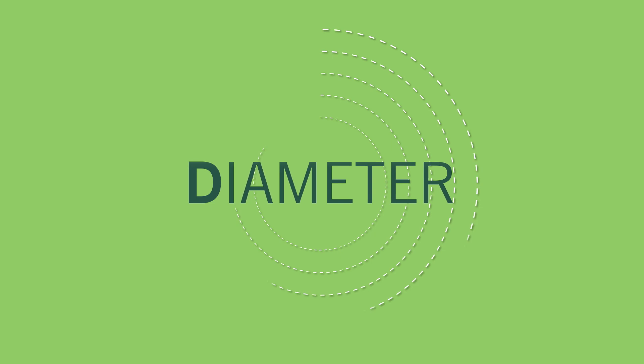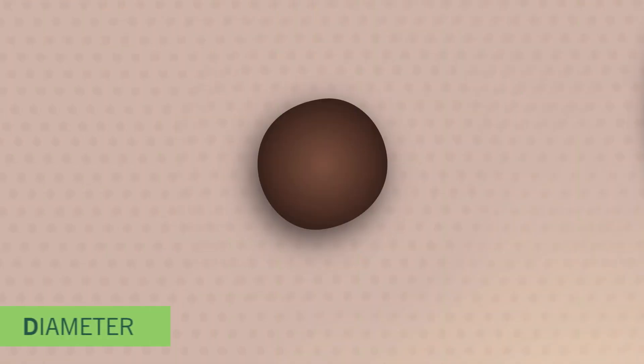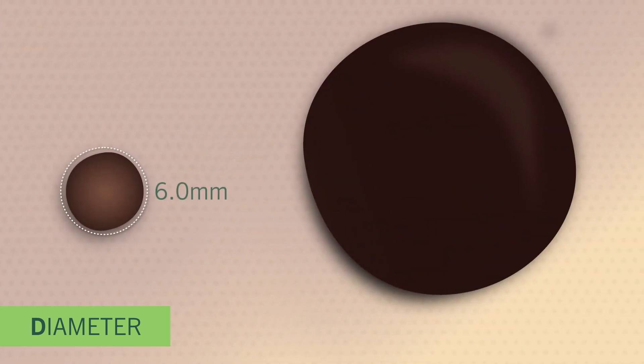D. Diameter. Larger skin spots are a sign of skin cancer. A good rule of thumb is that a spot with a diameter bigger than a pencil eraser is abnormal and should be checked out by a doctor.